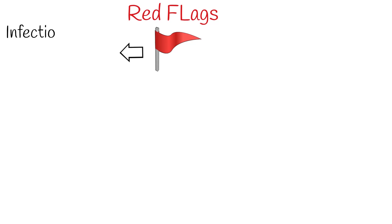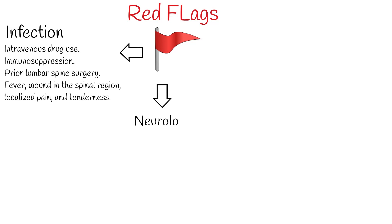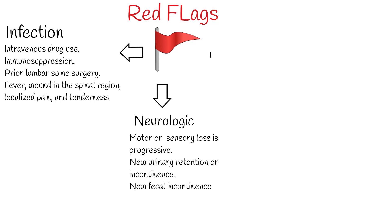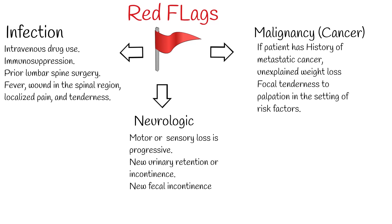Back pain due to infection is likely if the patient has a history of intravenous drug use, immunosuppression, prior lumbar spine surgery, fever, wound in the spinal region, localized pain, or tenderness. Neurologic cause is suspected when motor or sensory loss is progressive, or with new urinary retention, incontinence, or fecal incontinence. Cancer is suggested by history of metastatic cancer, unexplained weight loss, or focal tenderness with risk factors. These three — infection, neurologic, and malignancy — represent red flags and require further investigation.